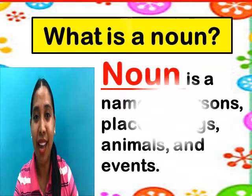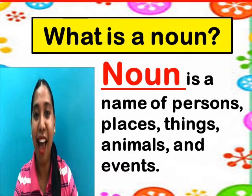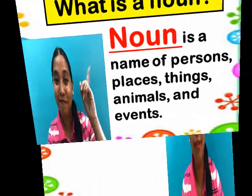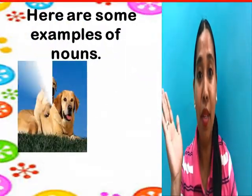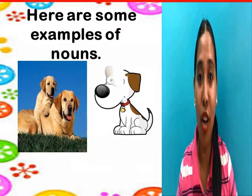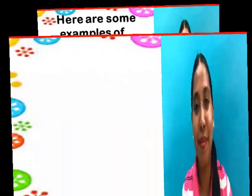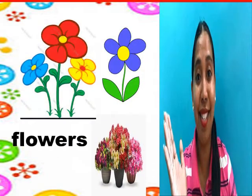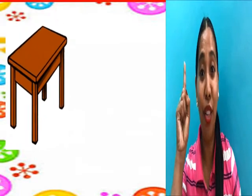What is a noun? Noun is the name of persons, places, things, animals, and events. Here are some examples of nouns. Dogs are animals. Flowers are things. Tables are things.